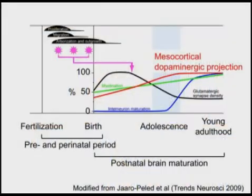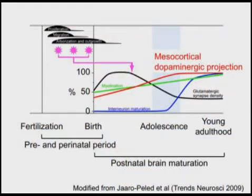Our behavior is, in part but not all, influenced by genetic factors. Some genetic factors working in early development may possibly affect postnatal brain maturation, such as synaptic pruning and maturation of dopaminergic projections.